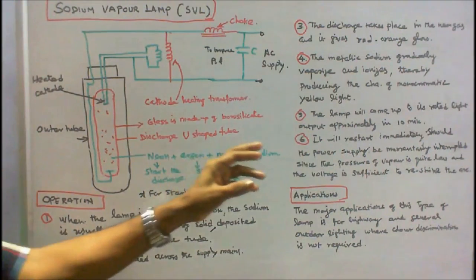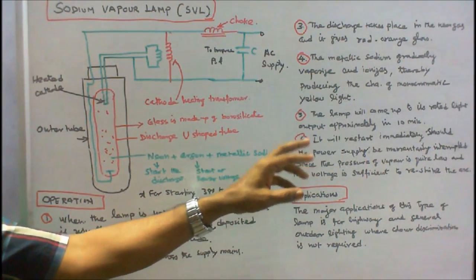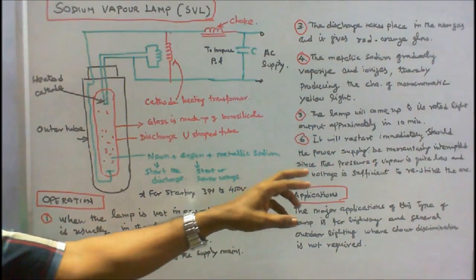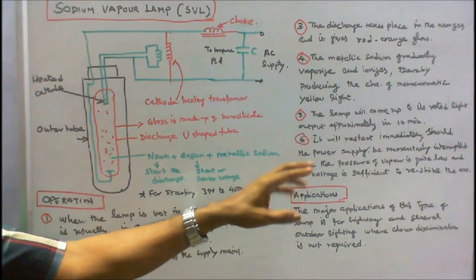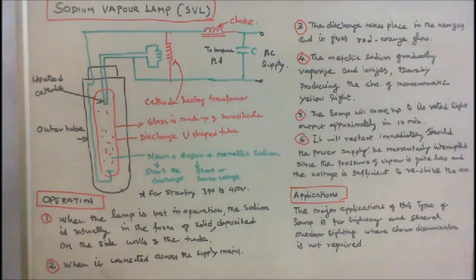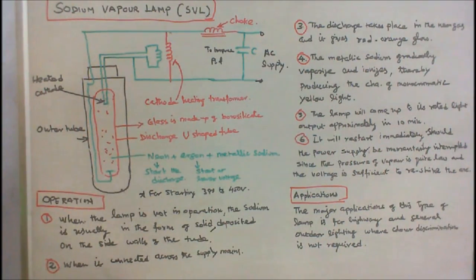It will restart immediately should the power supply be momentarily interrupted, since the pressure of vapor is quite low and the voltage is sufficient to restrike the arc. So at the time of starting it requires high voltage. Under operating condition it does not require high voltage.